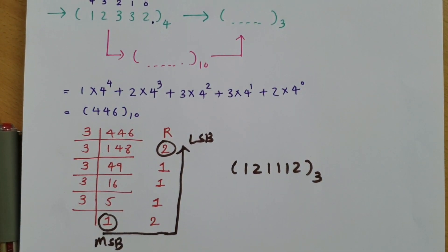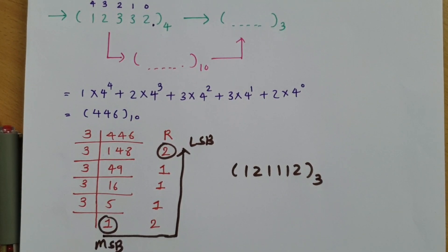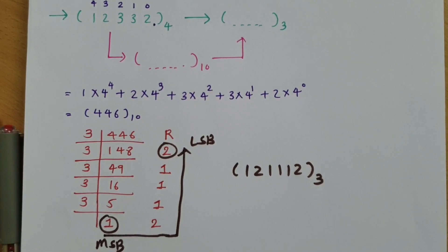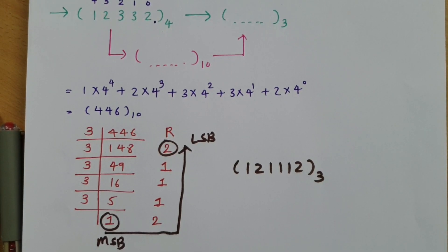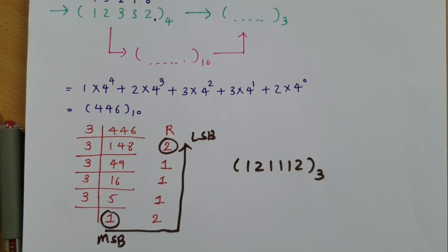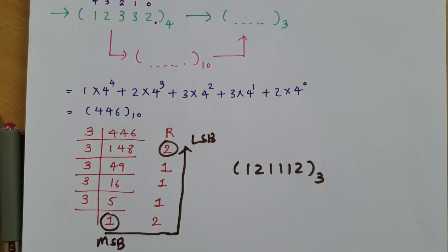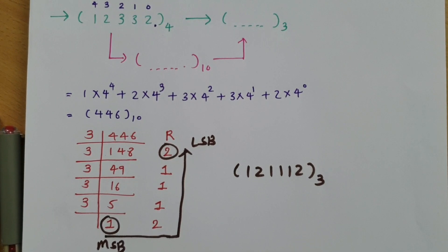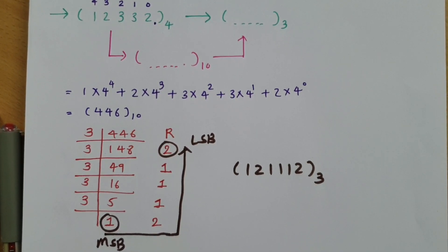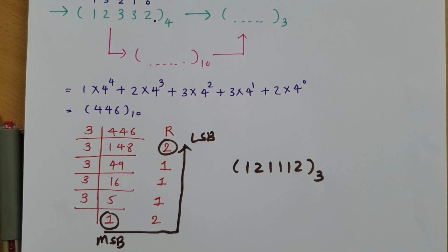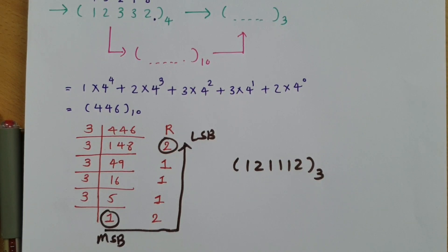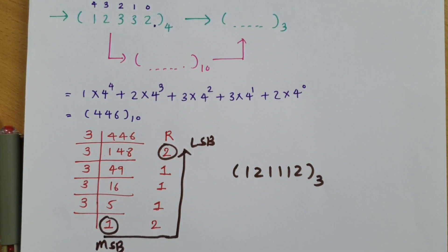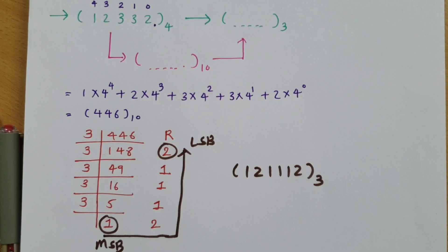That is how we can convert any number system into any other number system. The key rule to remember is: always convert the given system into decimal first, then convert from decimal into the target system. Note that for standard conversions like octal to hexadecimal, it can be more efficient to convert via binary rather than decimal, as the decimal route is a longer process.